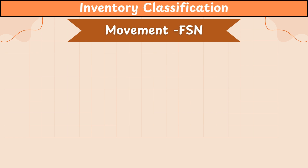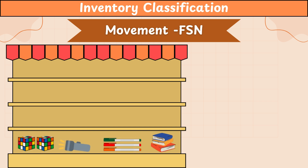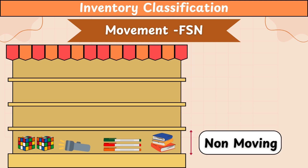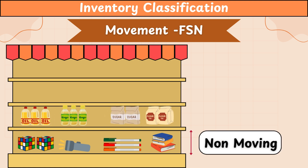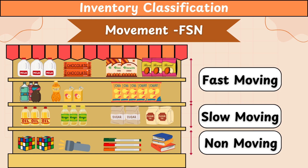The third classification is FSN classification, which classifies goods based on their movement. They can be classified into fast-moving, slow-moving, and non-moving. Items with zero sales over a period of time are non-moving goods. Fast-moving goods are those items which have sales above a threshold limit. This classification helps us avoid over-investing in slow-moving and non-moving goods, and manage reorder intervals for other items.